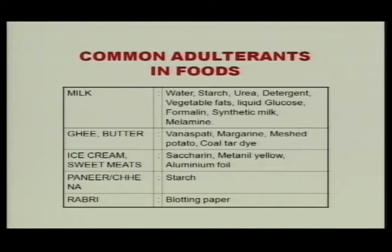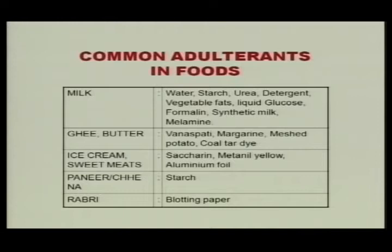In paneer or chhena, starch is added. In rabdi, blotting paper is added. In case of edible oils, argemone oil, coal tar dye, or cheaper oil is blended with good quality oil. In case of sugar, chalk powder and washing soda are added. In case of honey, sugar syrup is added. In case of jaggery, chalk powder and methylene yellow color are added.